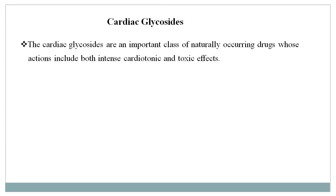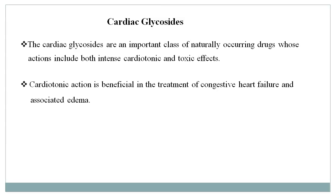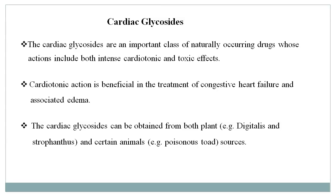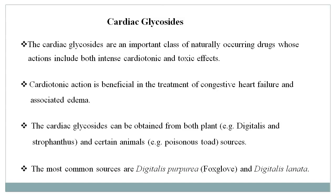The cardiac glycosides are an important class of naturally occurring drugs whose actions include both intense cardiotonic and toxic effects. Cardiotonic action is beneficial in the treatment of congestive heart failure and edema. The cardiac glycosides can be obtained from both plants and certain animals — examples of plants include digitalis and strophanthus, and examples of animals include the poisonous toad. The most common sources are Digitalis purpurea, also known as foxglove, and Digitalis lanata.